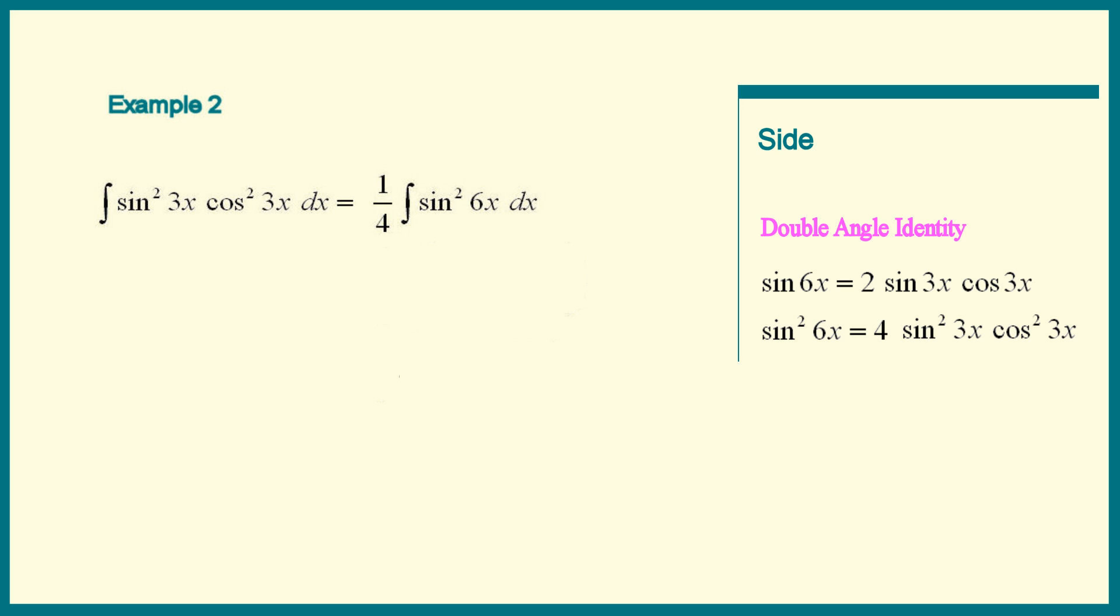Now the problem is very similar to example 1. We know how to solve that, right? Substitute the half angle identity for sine squared in.